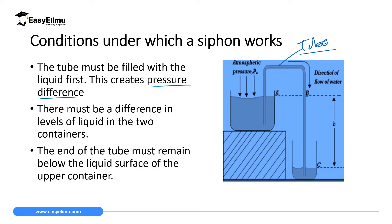The second condition is that there must be a difference in level of liquids in the two containers. The amount of liquid in the first tank must be at a different level from the liquid in the second tank, otherwise there will be no space where the fluid will be moving to. The third condition is that the end of the tube in the first container must remain below the liquid surface of the upper container.